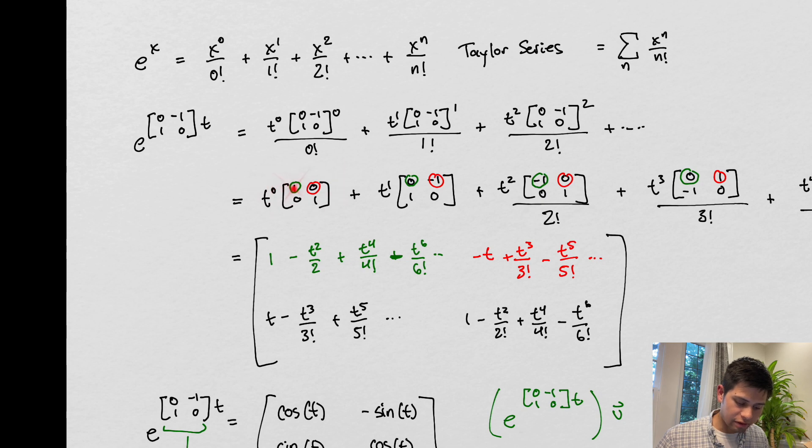So this is the identity matrix, and I'll explain what these red and green circles mean. And this here is literally just a copy because this is just this to the first power.